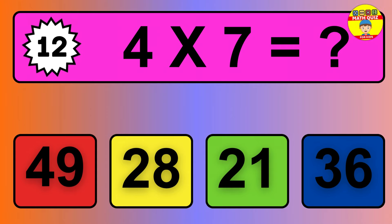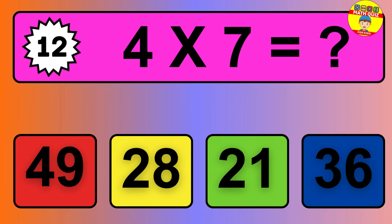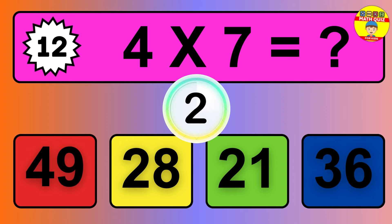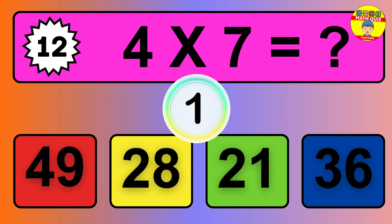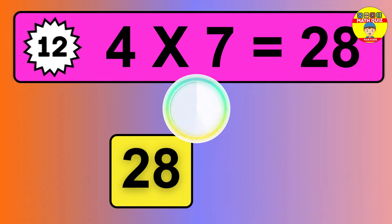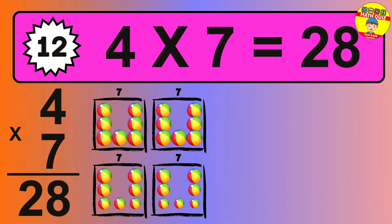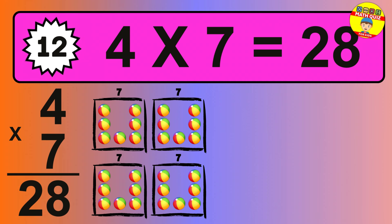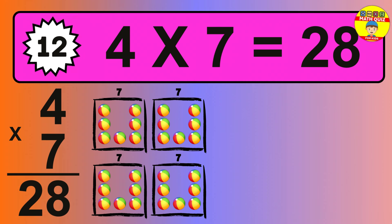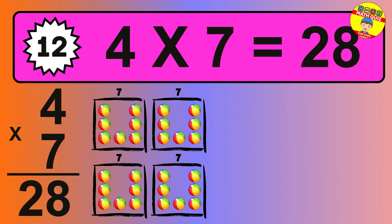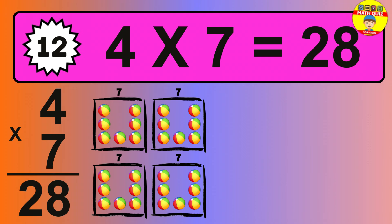Question 12. 4 times 7 equals what? The answer is 4 times 7 is 28. To calculate, we have 4 groups with 7 balls each one. So how many balls do we have? 28 balls.